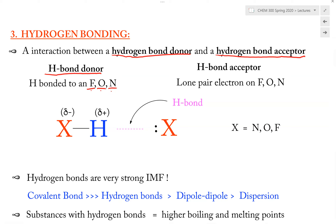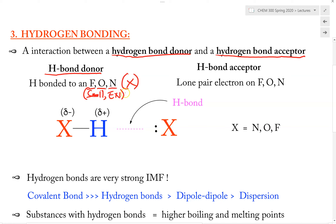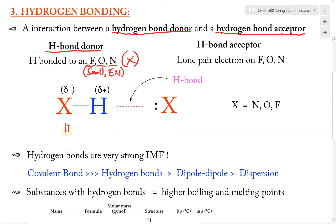Oxygen, Nitrogen, and Fluorine are very small and electronegative atoms. So 'En' stands for electronegative atom. Now let X be one of these atoms. When we have the atom X — where X can be Fluorine, Oxygen, or Nitrogen — bonded to a Hydrogen, then this makes up the Hydrogen Bond donor part.